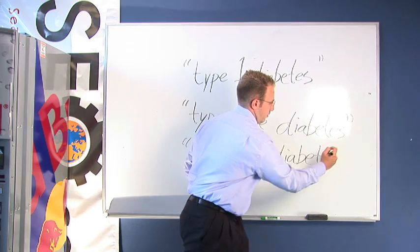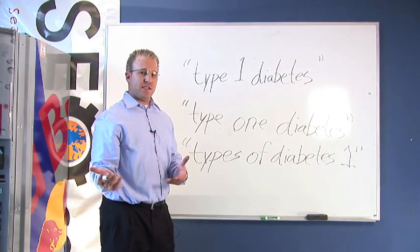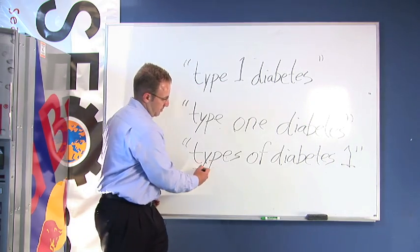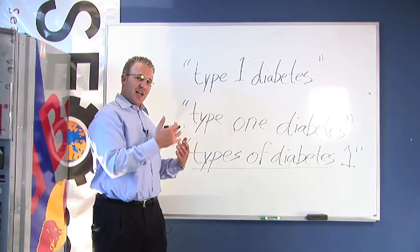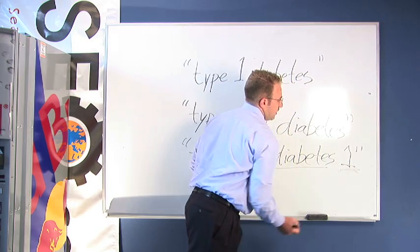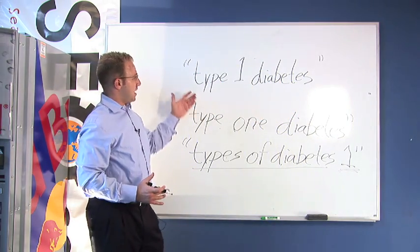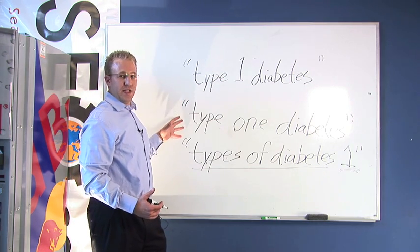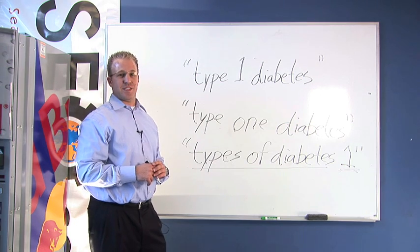The reason we wrote the keyword in this way is because what will happen is some people might go to the search engine, type in 'types of diabetes,' not find what they're looking for, then click back and add the number 1. This is a method I would advise to help you distinguish which keywords to assign per page within your website for organic search engine optimization.